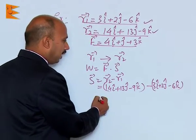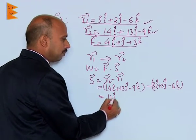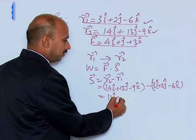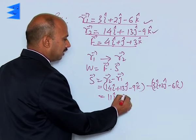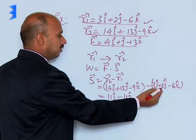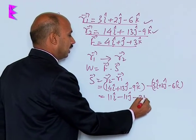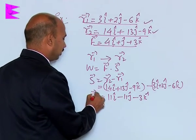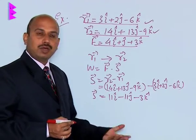So you can write here 11i + 11j - 3k. This is the displacement. Now we can calculate work done.